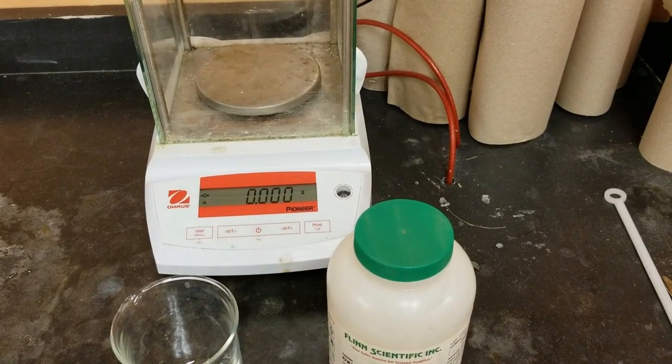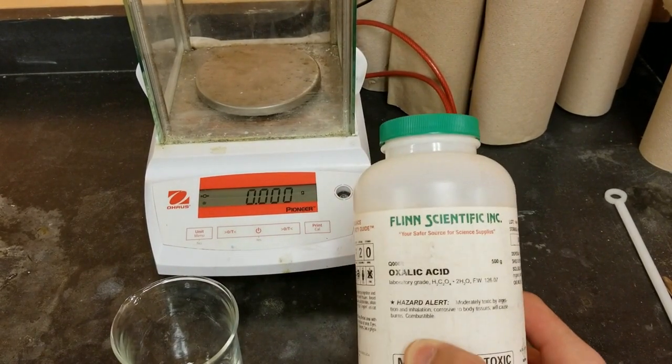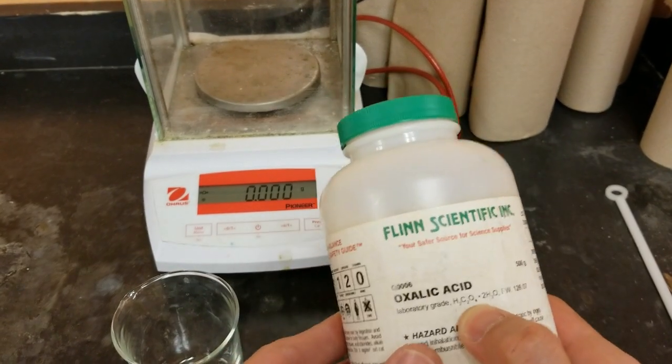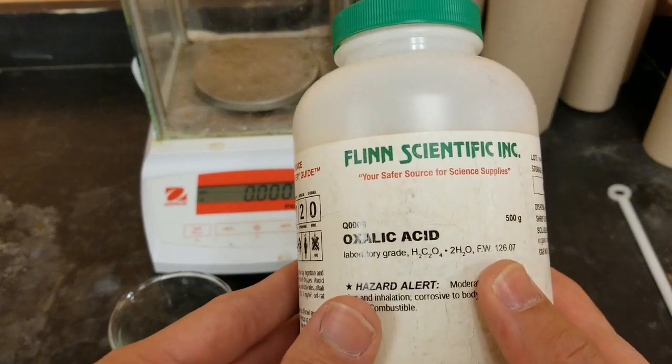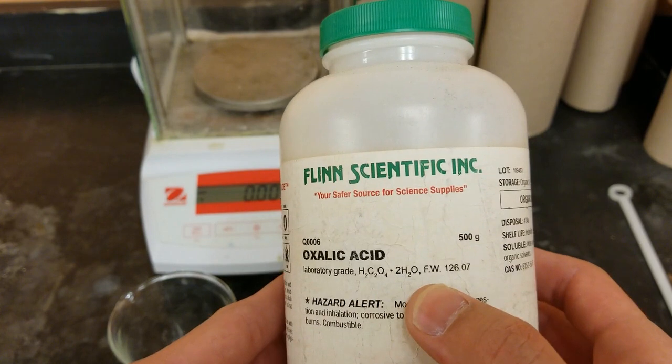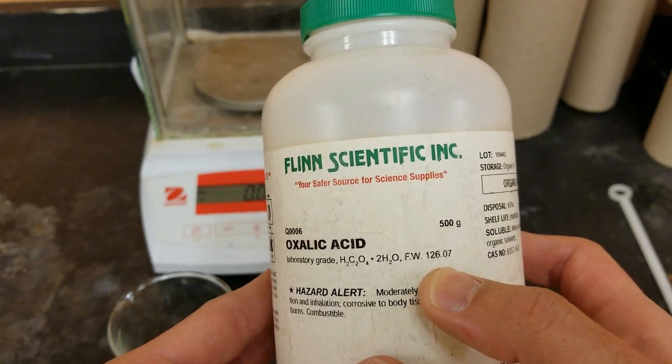The first thing that I'm going to be doing is measuring out some oxalic acid powder into this beaker. Oxalic acid has this formula: H2C2O4. It loses two hydrogens in reactions. Its formula weight or its molar mass is 126.07 grams per mole.